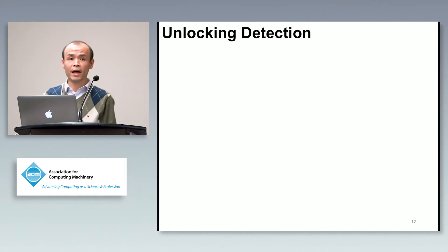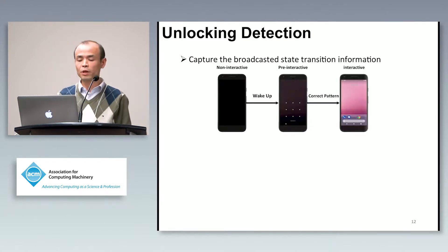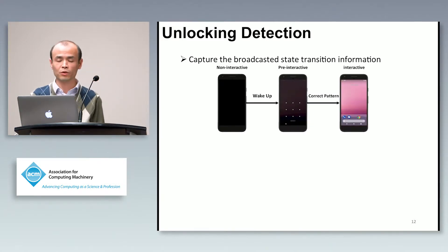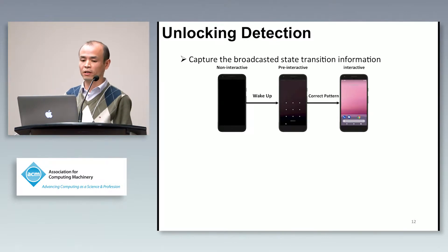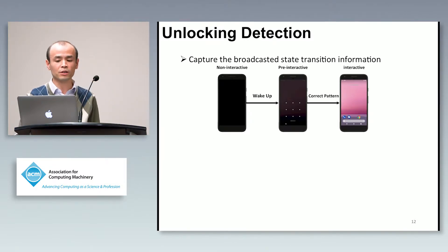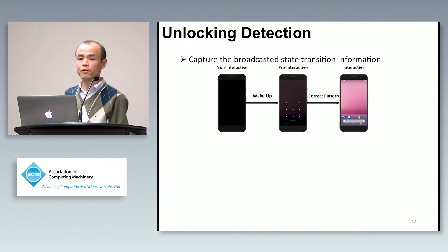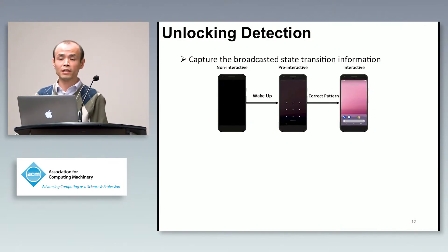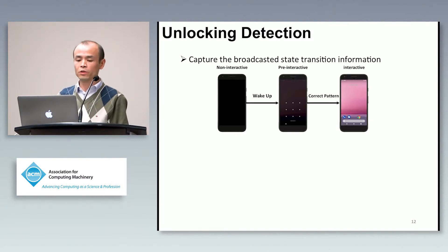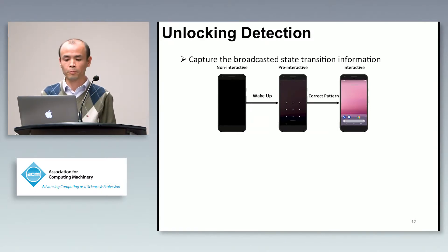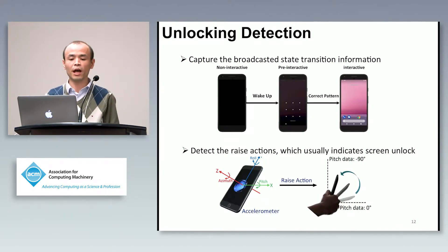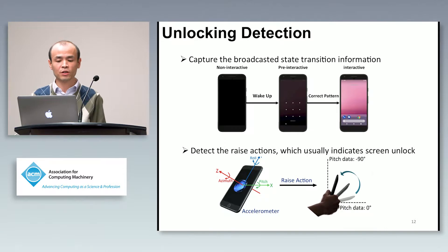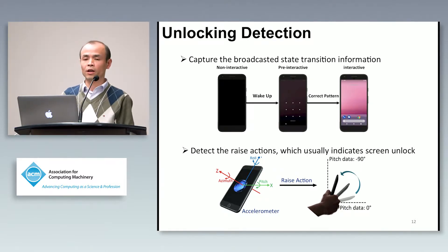Let's take a look at how we can detect the unlock behaviors of the users. We have two typical approaches. First, we can capture the broadcast state transition information — basically, if a phone is locked it is in non-active mode, so if we capture the state transition information we can understand the user may want to unlock his phone. Secondly, we can possibly detect read actions, which indicate the user wants to unlock his phone.